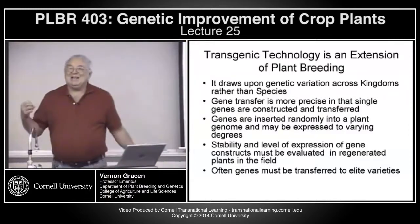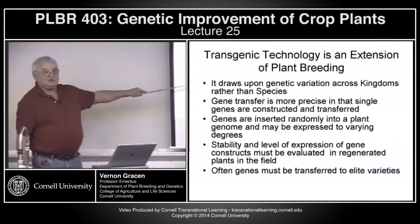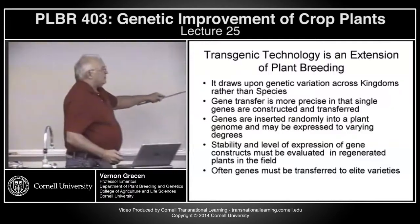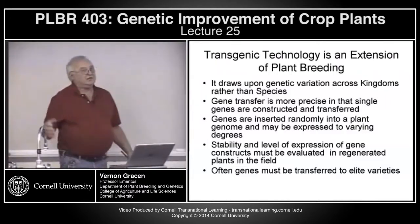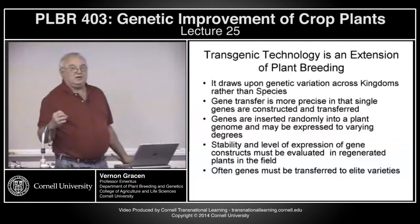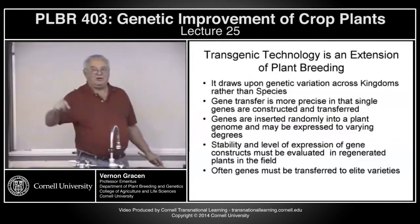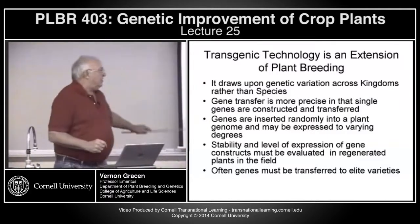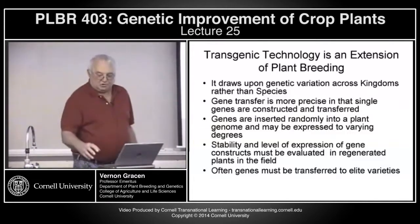About 99% of new constructs or transgenics are eliminated in about the second stage of testing because when you get to the field, the stability and level of expression of the gene just isn't there. Often, unless you can transform a really elite variety without changing anything else in its genetic background, you're going to have to transfer those genes to elite varieties — and that's often a series of steps that are ignored when people say we can transfer this into a crop very, very rapidly.